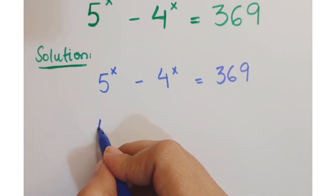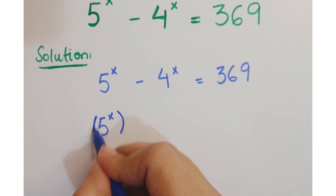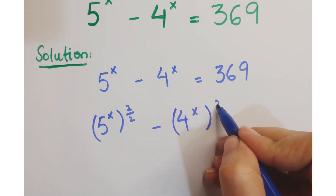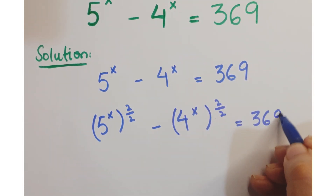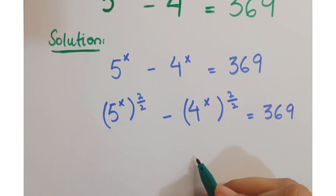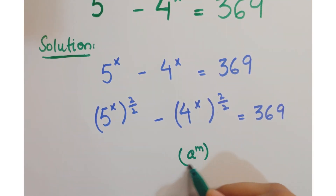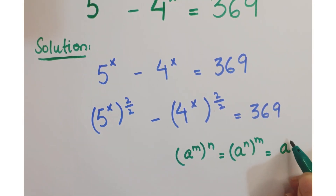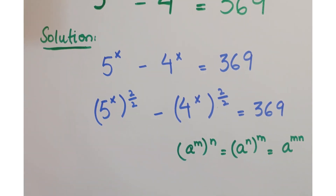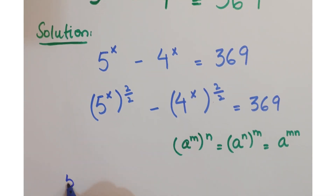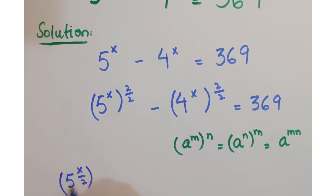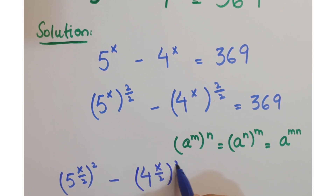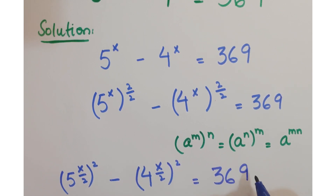Just take the multiply and divide the power with 2. As you know, a to the power m into n can be written as a to the power n into m. So you can write this as 5 to the power x upon 2, whole square, minus 4 to the power x upon 2, whole square, equals 369.